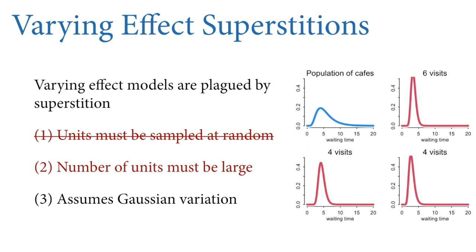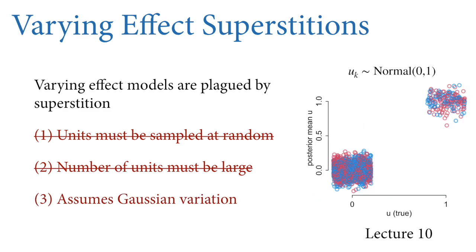The second fallacy is that the number of units must be large. This is not true in Bayesian estimation — we saw this in the coffee golem example, where we could do partial pooling with one cafe already, and as soon as we visit the second cafe we can already do multilevel estimation. Sometimes this is useful and realistic; not having a lot of data is not an excuse to use the wrong scientific model.